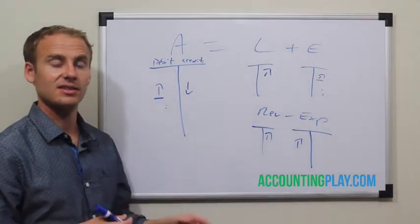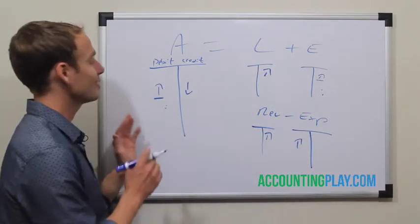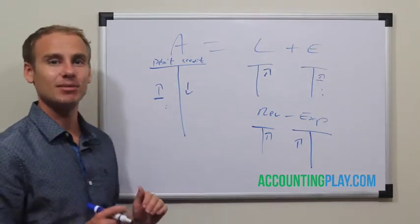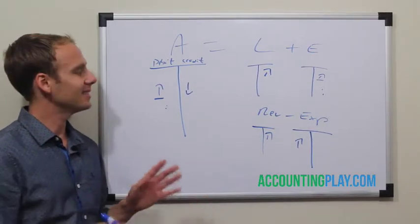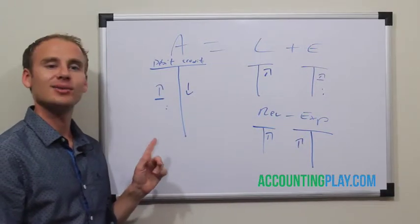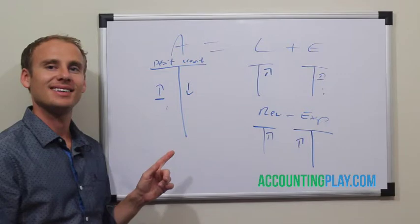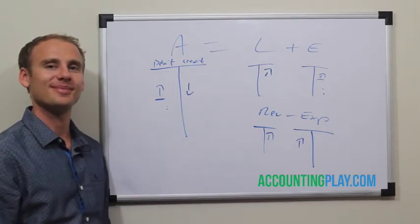Asset T-account transactions. In the accounting backend system of debits and credits, assets increase with a debit. Must be memorized. This is a system of the framework that we're working in and does not correspond to banking terms. So increase assets with a debit. This has been accountingplay.com. Thanks.